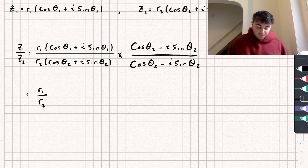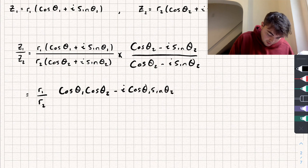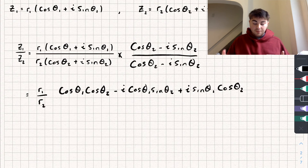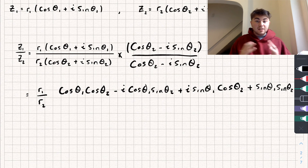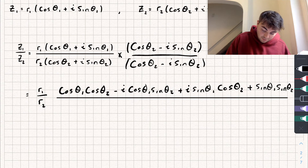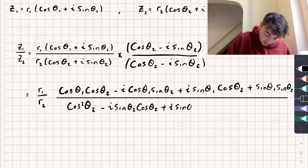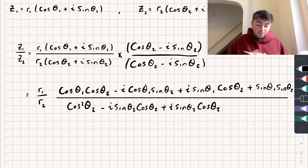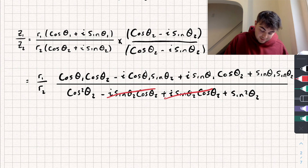Keeping r1/r2 out front, let's expand the numerator: cos theta1·cos theta2, minus i·cos theta1·sine theta2, plus i·sine theta1·cos theta2, and finally — since i times negative i gives positive 1 — plus sine theta1·sine theta2. For the denominator, expanding gives cos²theta2 minus i·sine theta2·cos theta2 plus i·sine theta2·cos theta2 plus sine²theta2.